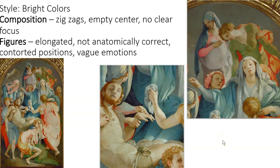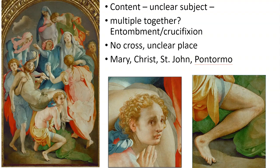If we think about Mary, in the past we've seen either a very calm Mary or a very sad Mary. Now her emotion is more confusing — we can tell there's an intense emotion, but the exact one is unclear. As for content, it's called Entombment of Christ — possibly entombment, possibly crucifixion. We do see a little mark to show he was on the cross, but there's no actual cross. We can assume it's outside because of the cloud, but it's really not clear. There's also a thought that Pontormo modeled himself into the piece — something artists did in other works as well.